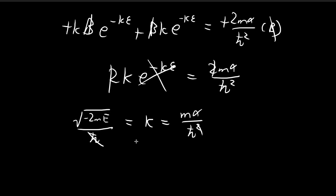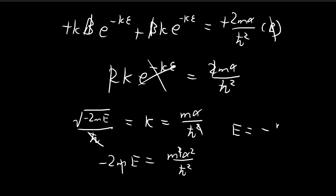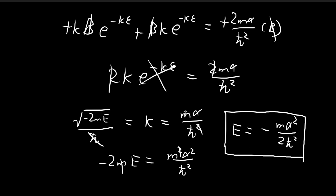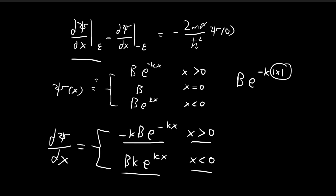Taking h-bar to the right-hand side and squaring both sides, we have negative 2mE equals m squared alpha squared divided by h-bar squared. The m cancels out, and we find that the energy level E equals negative m alpha squared divided by 2 h-bar squared. This is a very important result for the potential equal to negative alpha times delta of x — we have found the allowed energy. From here we can move on to find what b should be.